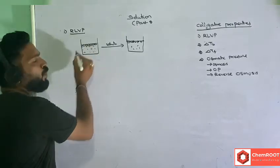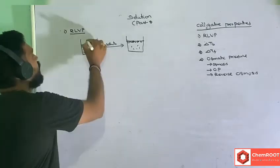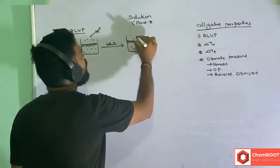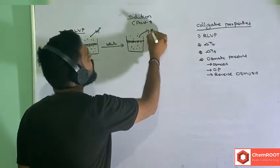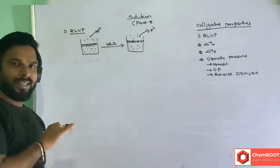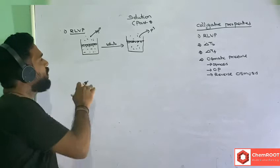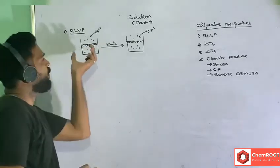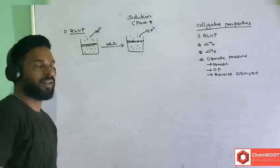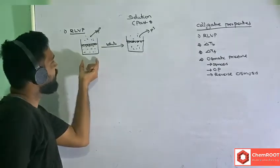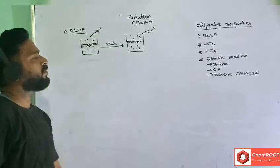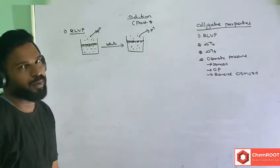In pure solvent, only solvent particles are on the surface, so vapor pressure will be P0. After adding solute, vapor pressure decreases. P0 is greater than Ps. This decrease in vapor pressure upon addition of solute is what we call the lowering of vapor pressure.